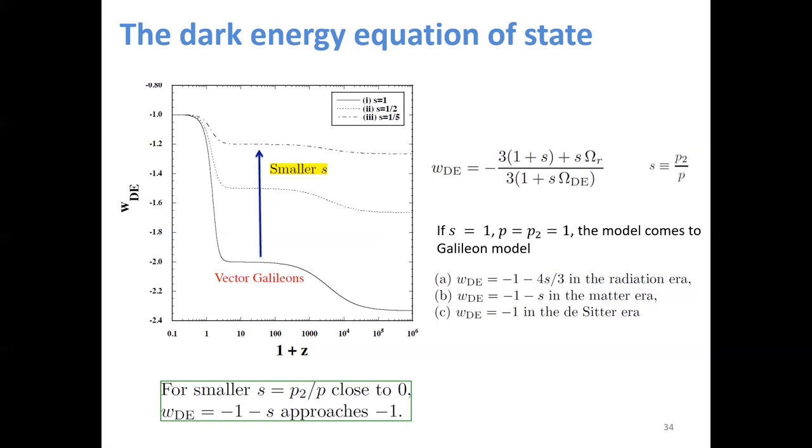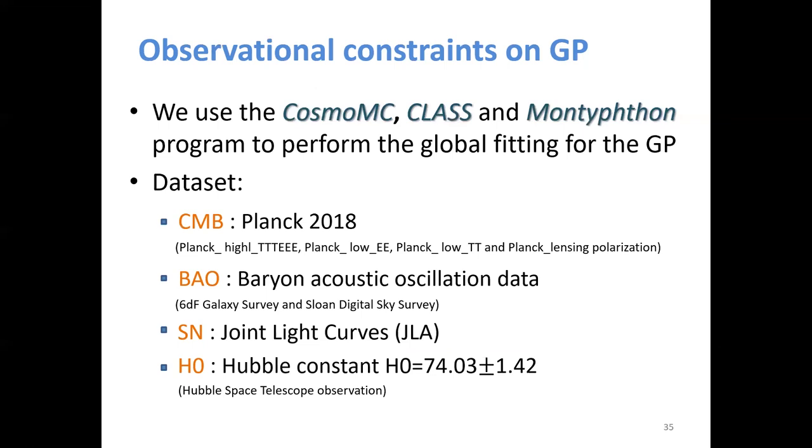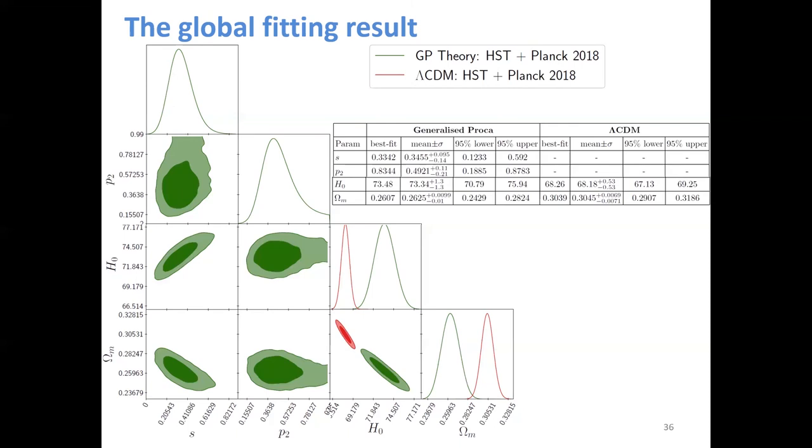We did the observational constraints on the generalized Proca theory. We use the Cosmic class and the Monte Python program to do the global fitting for that. And for the data side, we select Planck 2018, and the BAO data, supernova data, especially we added the R19 prior for the Hubble constant. This result is only based on the CMB and R19 prior. We can see the free parameter S is almost equal to 0.3. It didn't go back to lambda CDM and didn't move to Galileon. So the H0 parameter in the generalized Proca theory is almost equal to 73, and it can be distinguished with the result from lambda CDM.